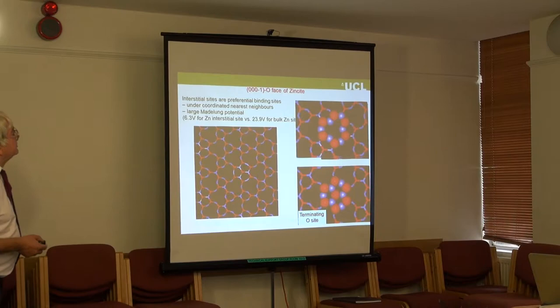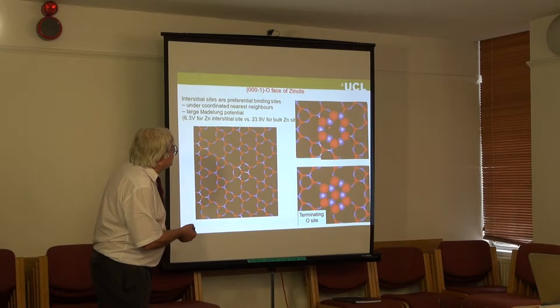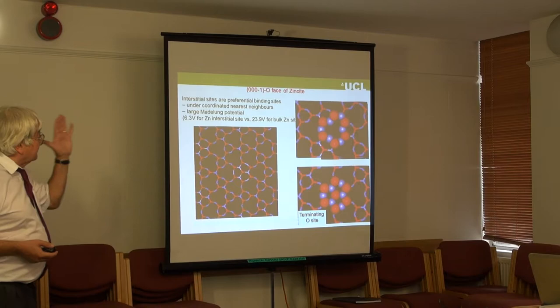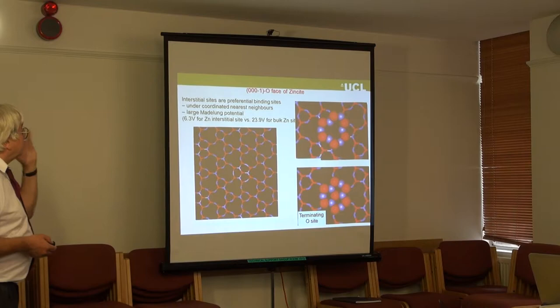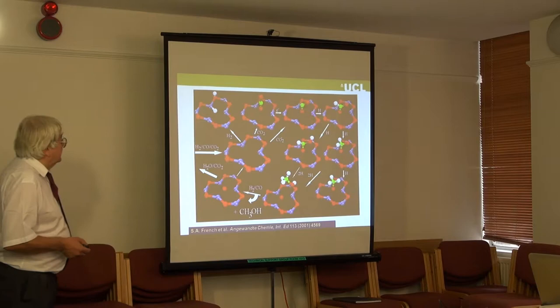You have an oxygen vacancy site, and it turns out to be a very effective trap for electrons — a kind of surface F-centre. We argue, and there's quite a lot of evidence for this, that this defect site with a trapped electron plays a crucial role in the catalysis.